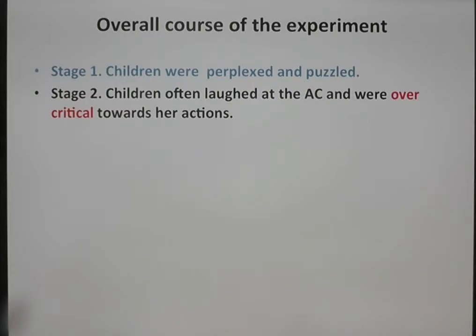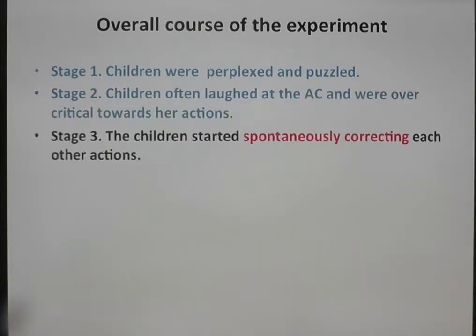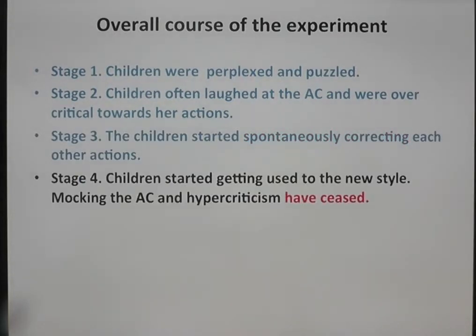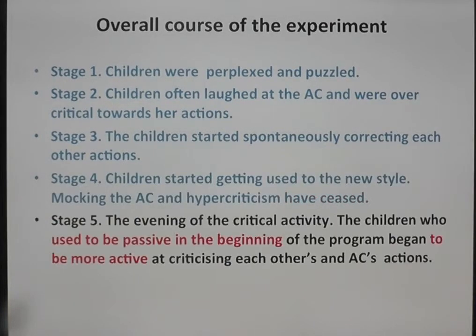The overall course of the experiment comprised the following stages. In stage one, children were perplexed and puzzled. In stage two, children often laughed at the adult child and were over-critical towards her actions. In stage three, the children started spontaneously correcting each other's actions. In stage four, children started getting used to the new style, and mocking the adult child and hyper-criticism ceased. In stage five, critical activity intensified: children who used to be passive in the beginning of the program began to be more active at criticizing each other's and the adult child's actions.